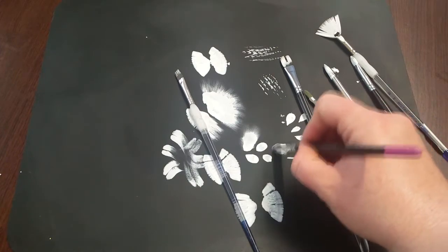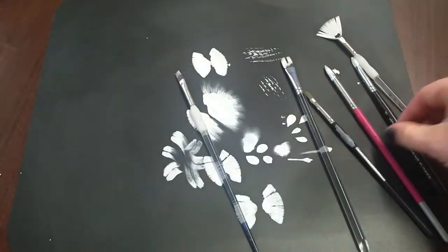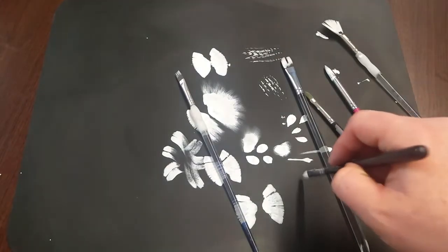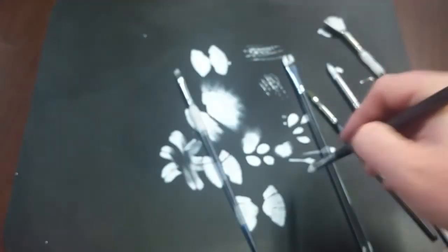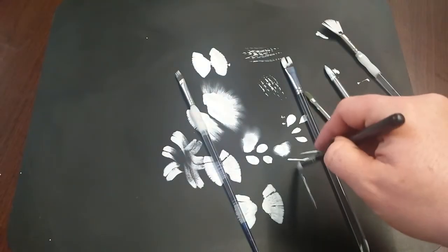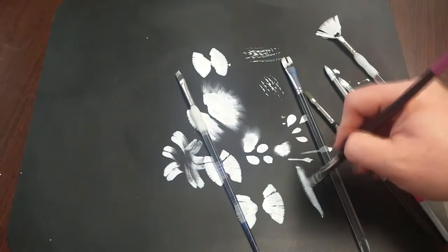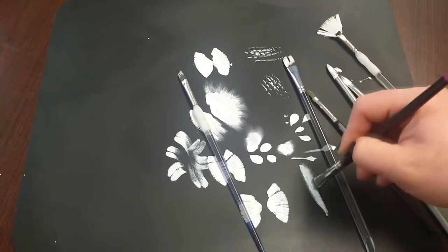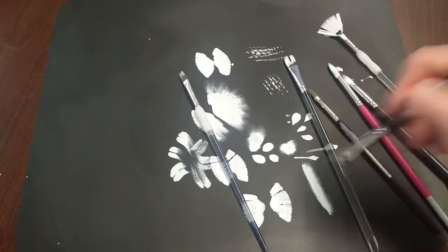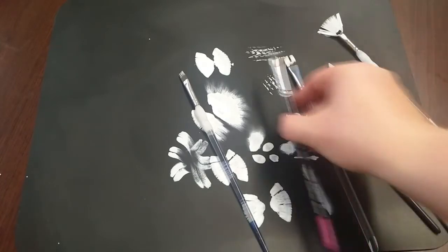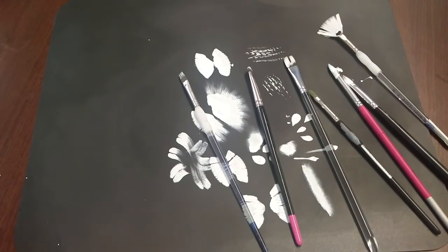But it can also be used - and it's what I use it most for - is for shading a line. So if you have, let's say, a thick line because you're doing some 3D effects, you can then use this brush to just shade out the edges and make it more 3D, more standout, which is great for if you're doing body illusion work.